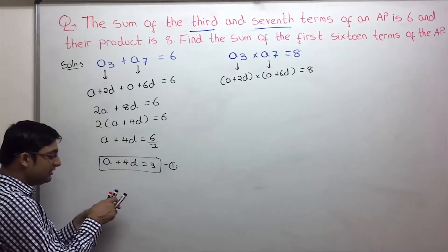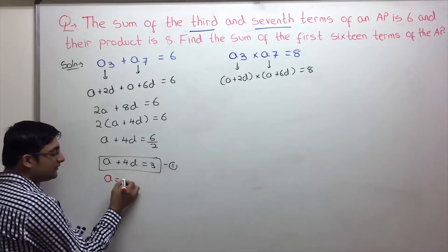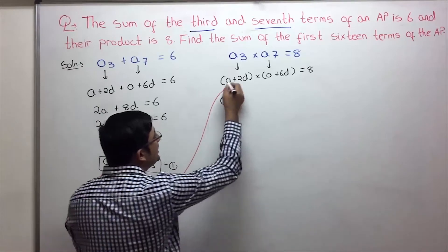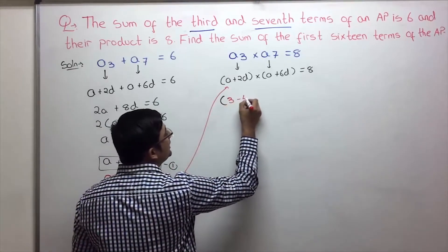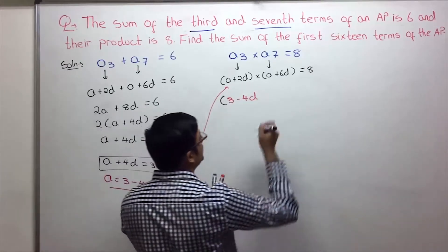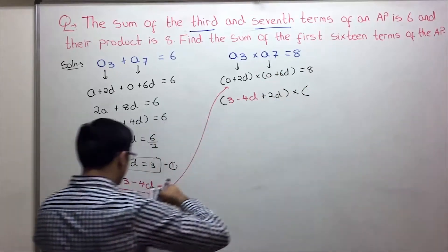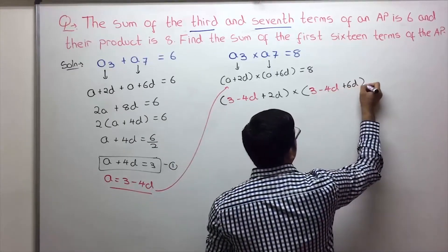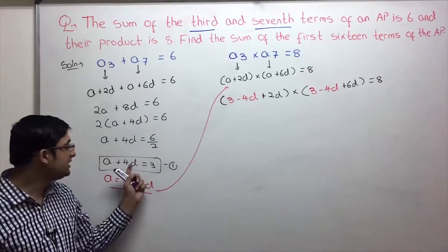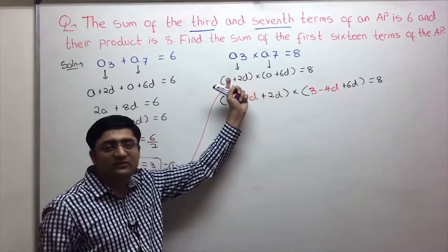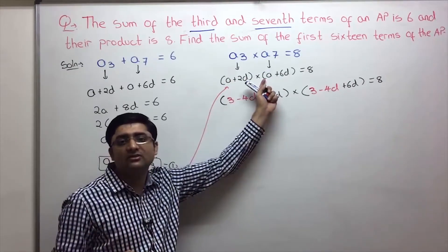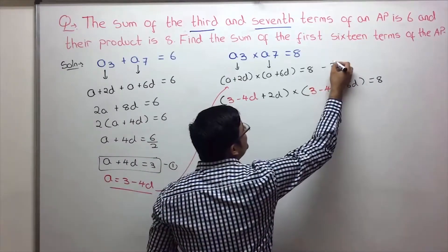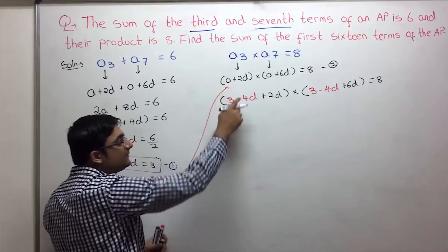From equation 1, A plus 4D equals 3, so A equals 3 minus 4D. Substituting into the product equation: 3 minus 4D plus 2D, which is 3 minus 2D, multiplied by 3 minus 4D plus 6D, which is 3 plus 2D, equals 8.